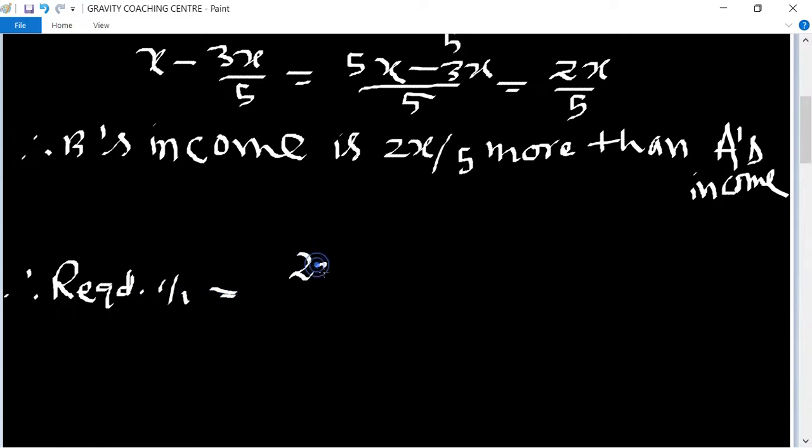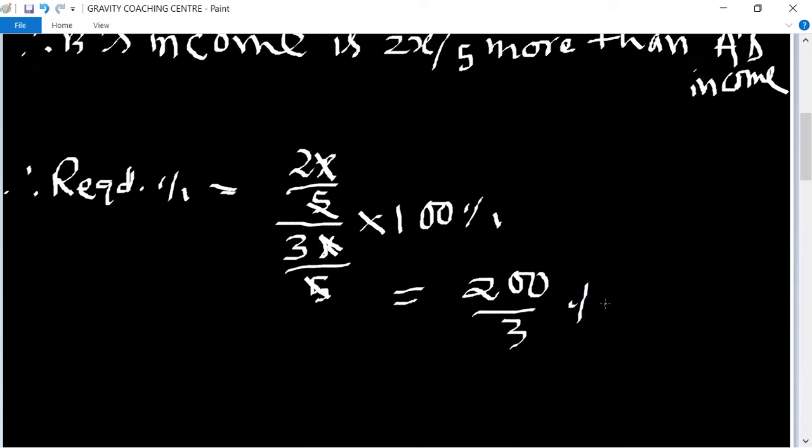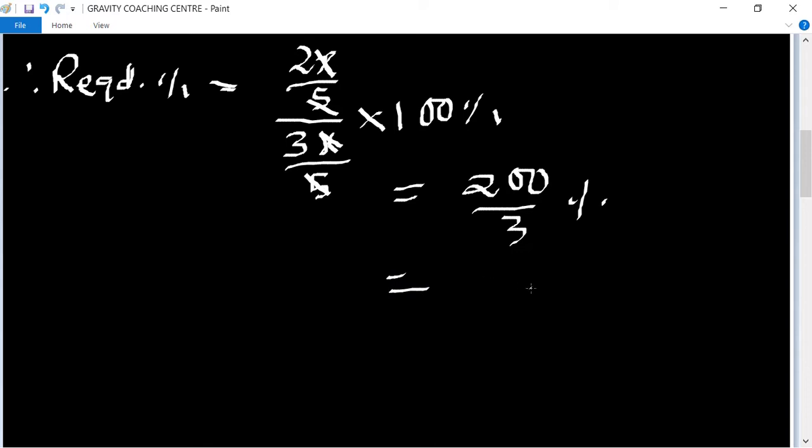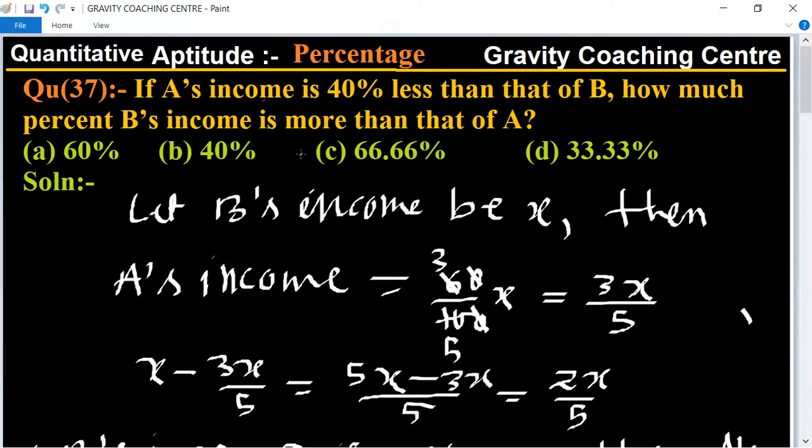(2X/5) divided by (3X/5) multiplied by 100%, which equals 200/3%, which equals 66.66%. This is the required answer, so option C is the right answer.